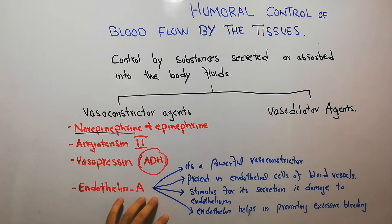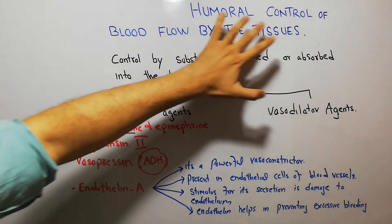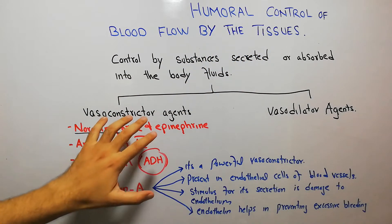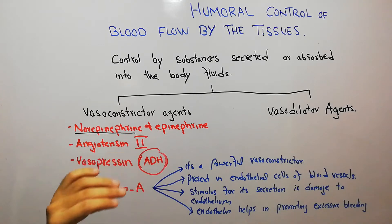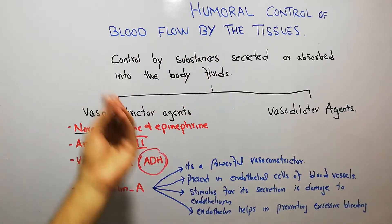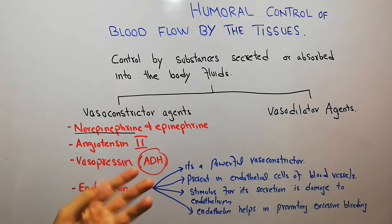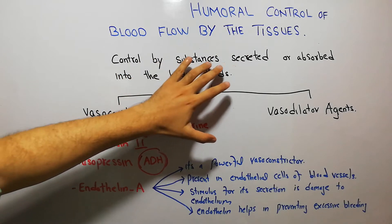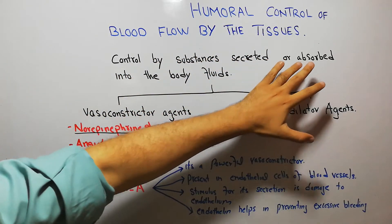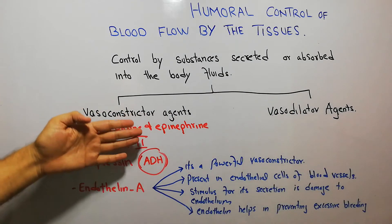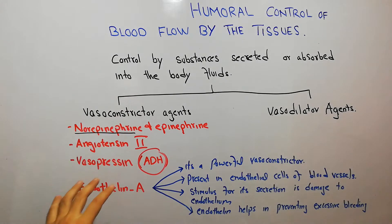Today we are going to discuss endothelin A and its role in humoral control of blood flow by the tissues. We have discussed previously the other vasoconstrictor agents: norepinephrine, epinephrine, angiotensin 2, vasopressin, and their role in blood flow control as humoral agents. Humoral control of blood flow is basically with the help of substances which are secreted or absorbed into the body fluids, and they can be vasoconstrictor or vasodilator agents. Today we cover the final vasoconstrictor agent: endothelin A.